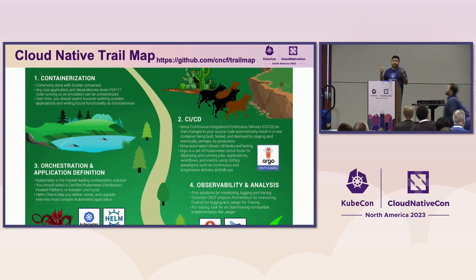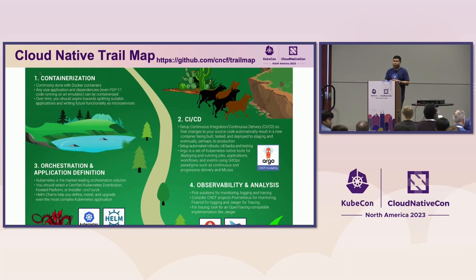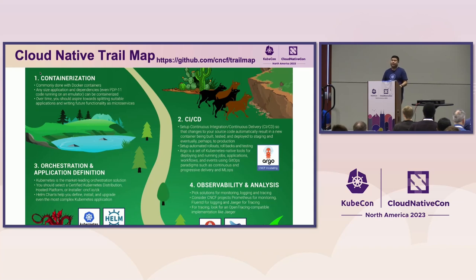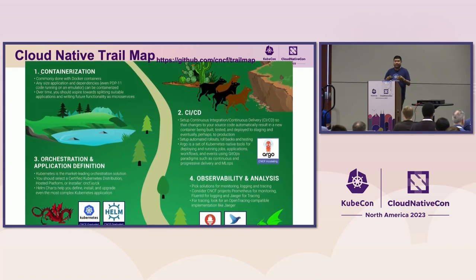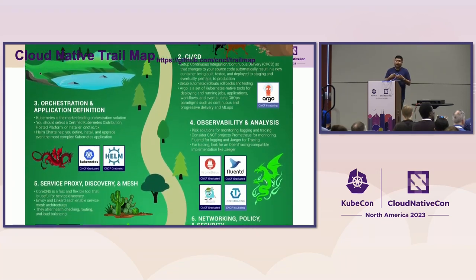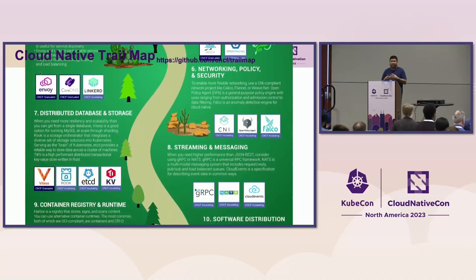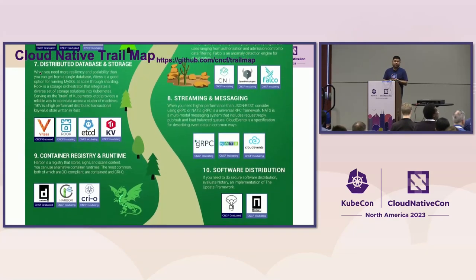The second point of reference is the cloud native trail map, published in 2018 by the CNCF to guide organizations on their cloud native journey. It's still at the enterprise/organization level, so it can be difficult to navigate on a personal learning level. We won't go through every step or in exact order, but we'll cover most of them.